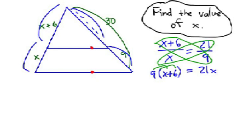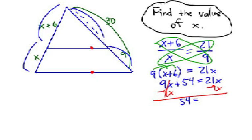9 times x and 9 times 6 would be 9x plus 54 equals 21x. Let's go ahead and move the 9x to the other side. In other words, subtract 9x from each side, and that will give us 54 equals 12x.